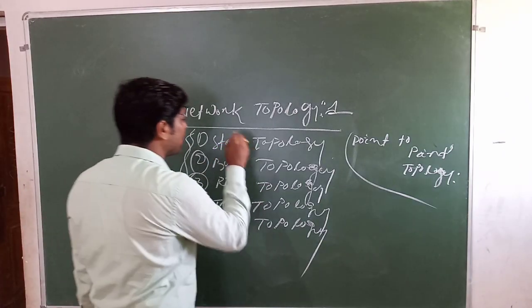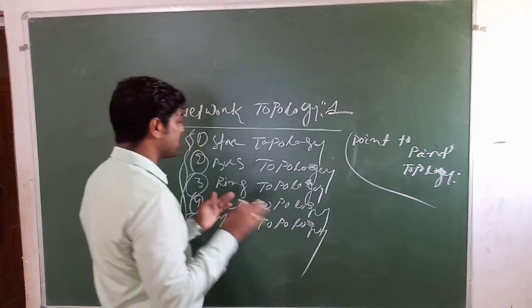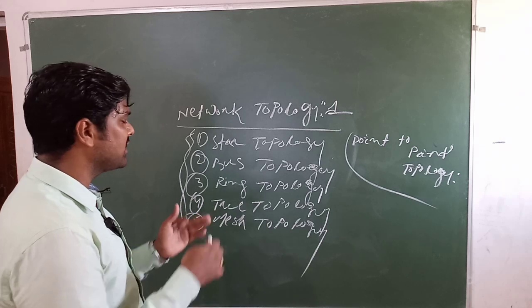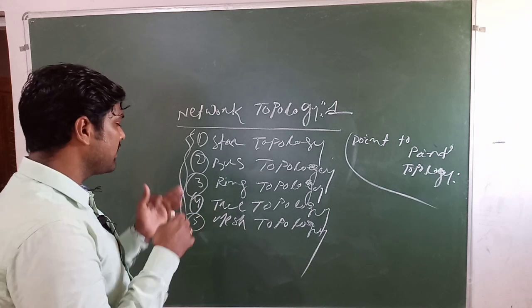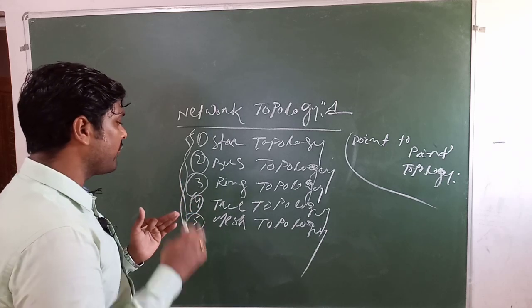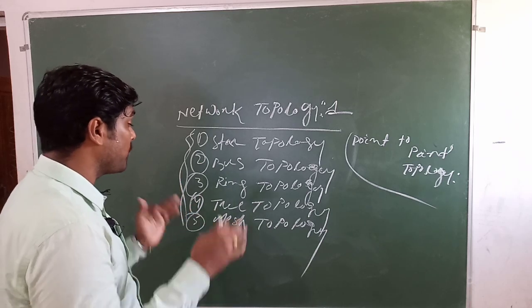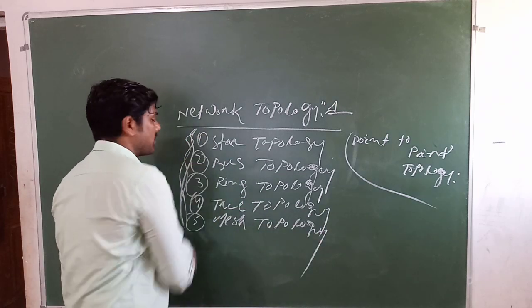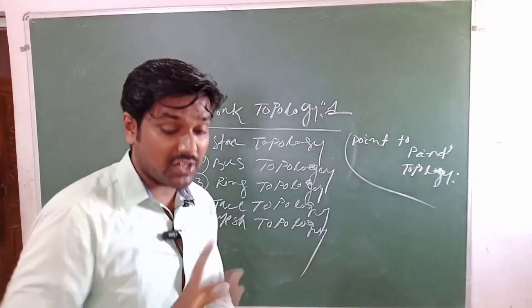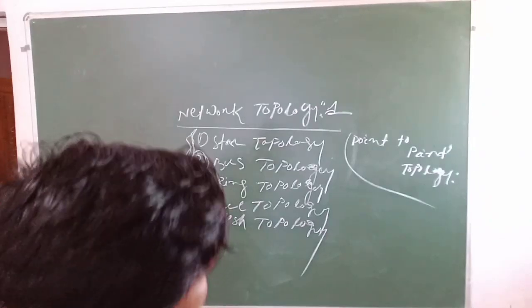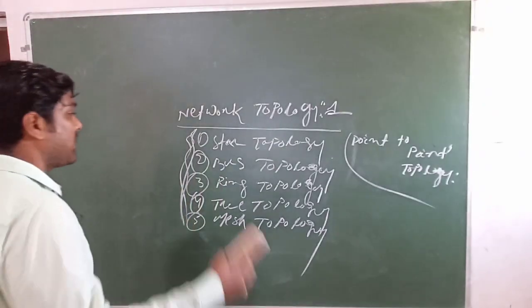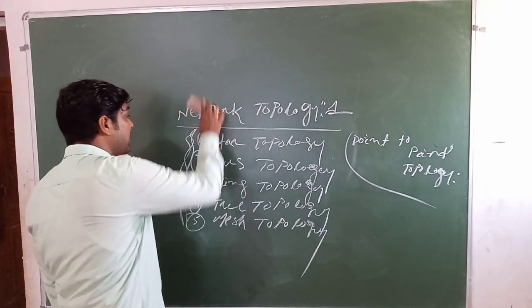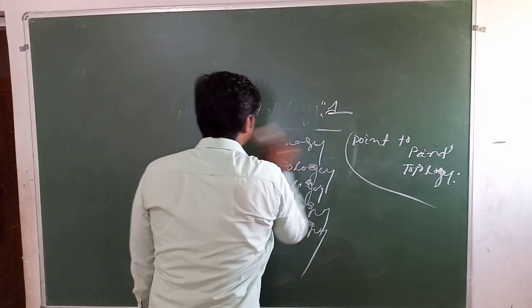Number 1 is star topology, number 2 is bus topology, number 3 is ring topology, number 4 is tree topology, and number 5 is mesh topology. We must discuss all 5 types of topology.